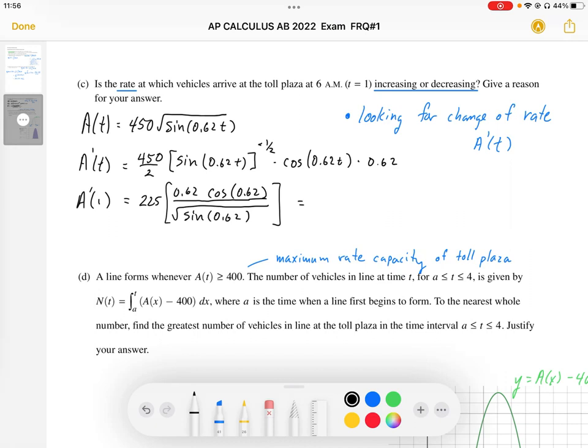And so I end up with a prime is 148.947, and that's going to be the cars per hour per hour.